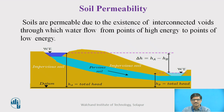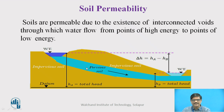Soils are permeable due to the existence of interconnected voids through which water flows from points of high energy to points of low energy. The blue portion shown here represents a pervious soil through which water is flowing. On the downstream side, at a certain location, this water will be collected at a free surface. This flow of water through the soil media is needed to ensure the stability of the structure.